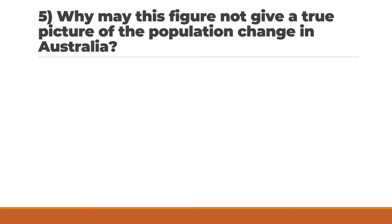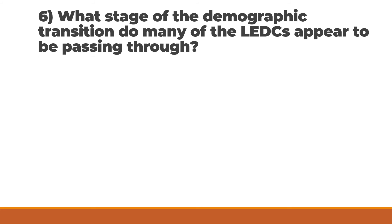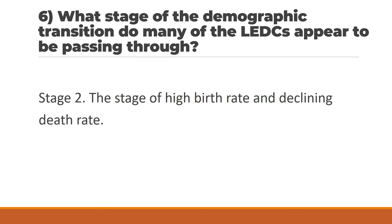Question 5: Why may this figure not give a true picture of the population change in Australia? Question 6: What stage of the demographic transition do many of the LEDCs appear to be passing through? Answer: Stage two — the stage of high birth rate and declining death rate.